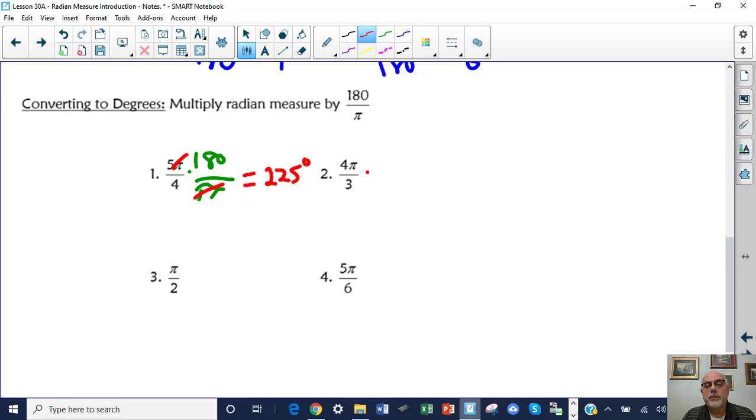4 pi over 3 multiplied by 180 over pi. Pis cancel. Then you're going to get your calculator and multiply 4 thirds times 180 and you get 240 degrees.